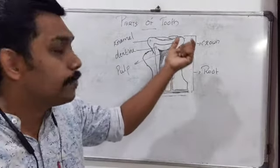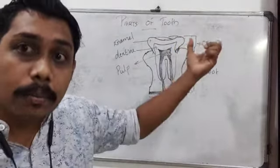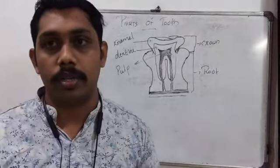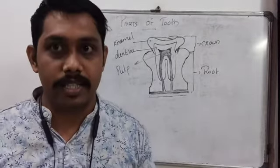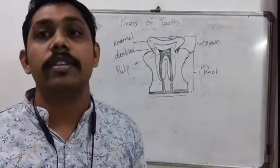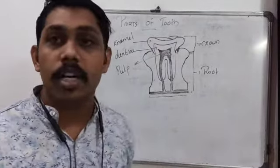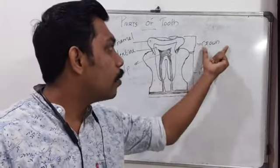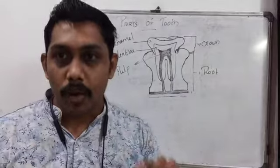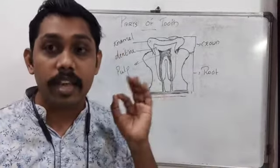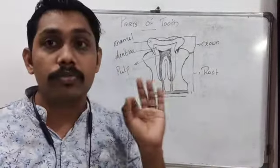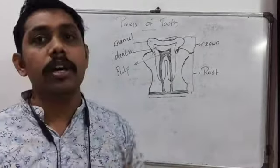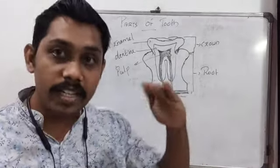The part below the crown — inside the gums — is called the root. We cannot see the root with our eyes. So, the two main parts are crown and root. The crown is the visible part of the tooth, and the root is the part below the crown, inside the gums.